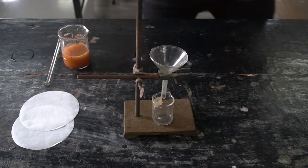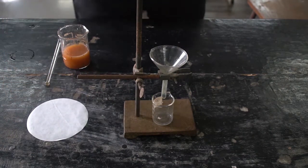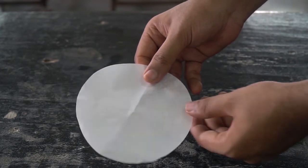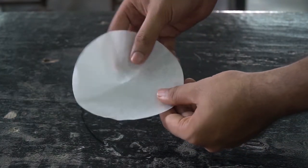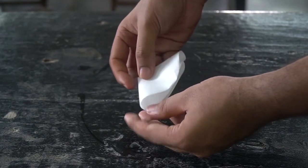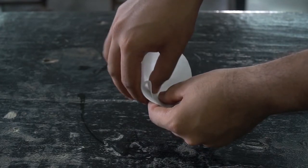First we take the filter paper and make two folds, folding it into four equal parts and then splitting one of those parts open to make a cone shape.